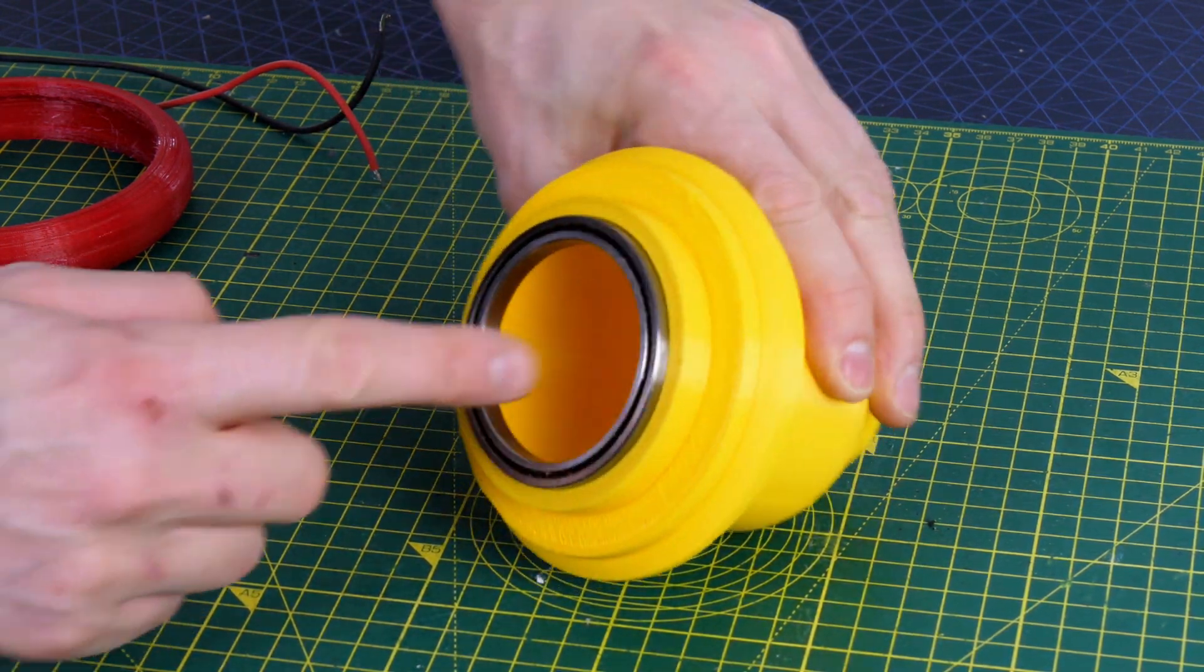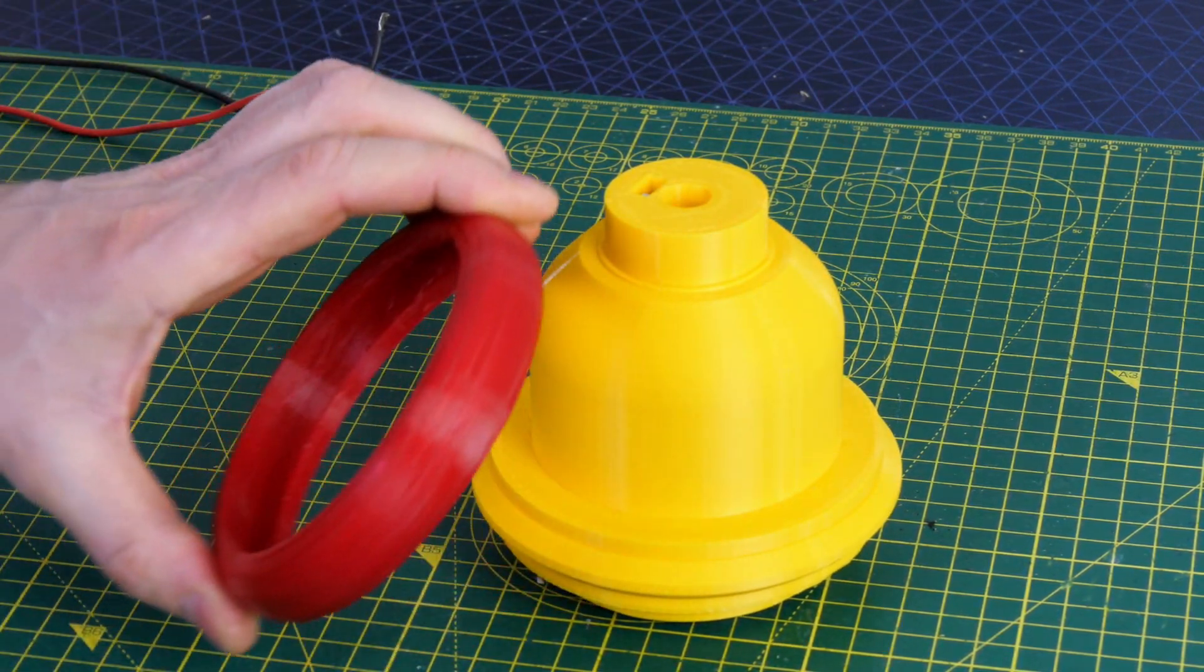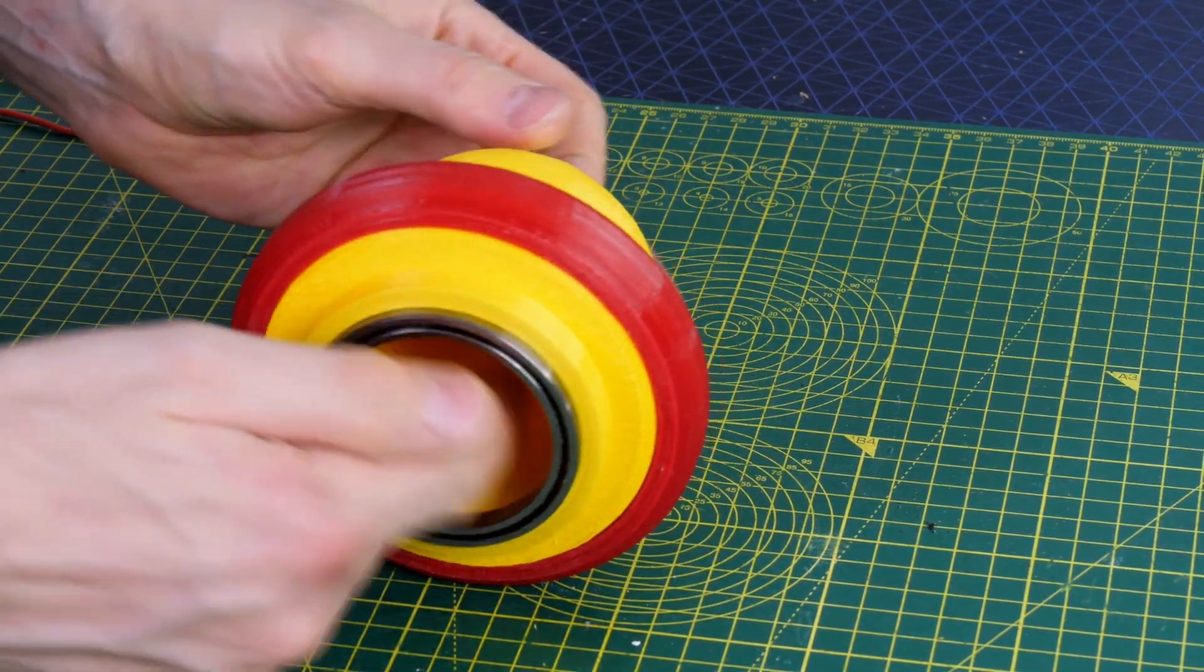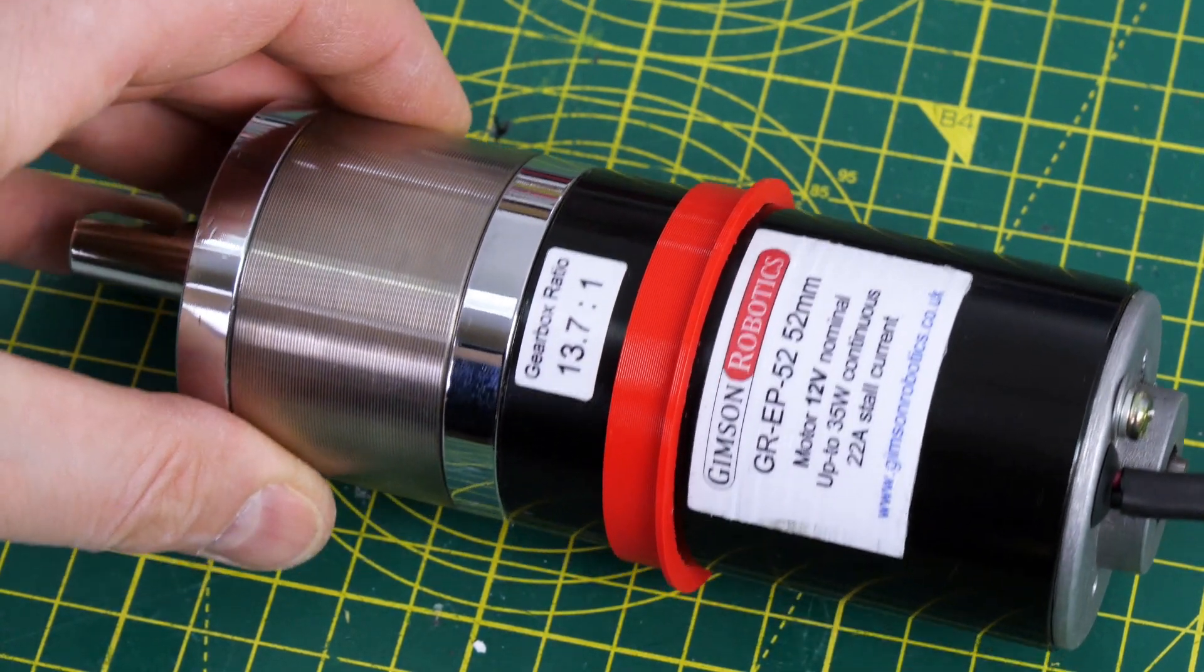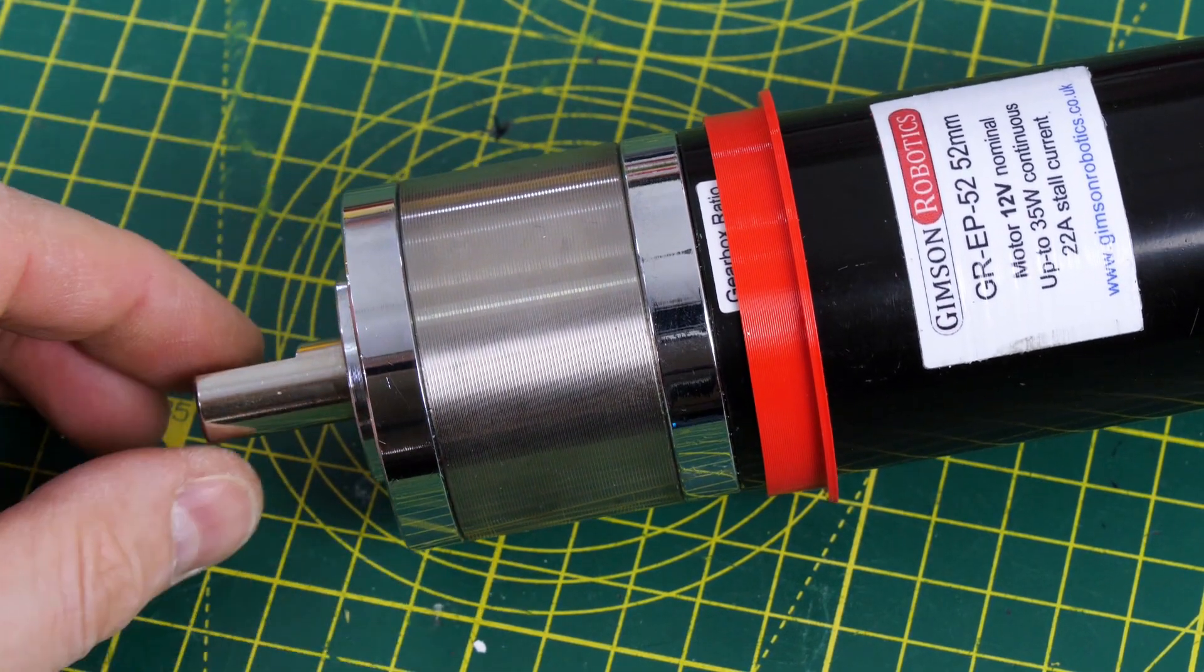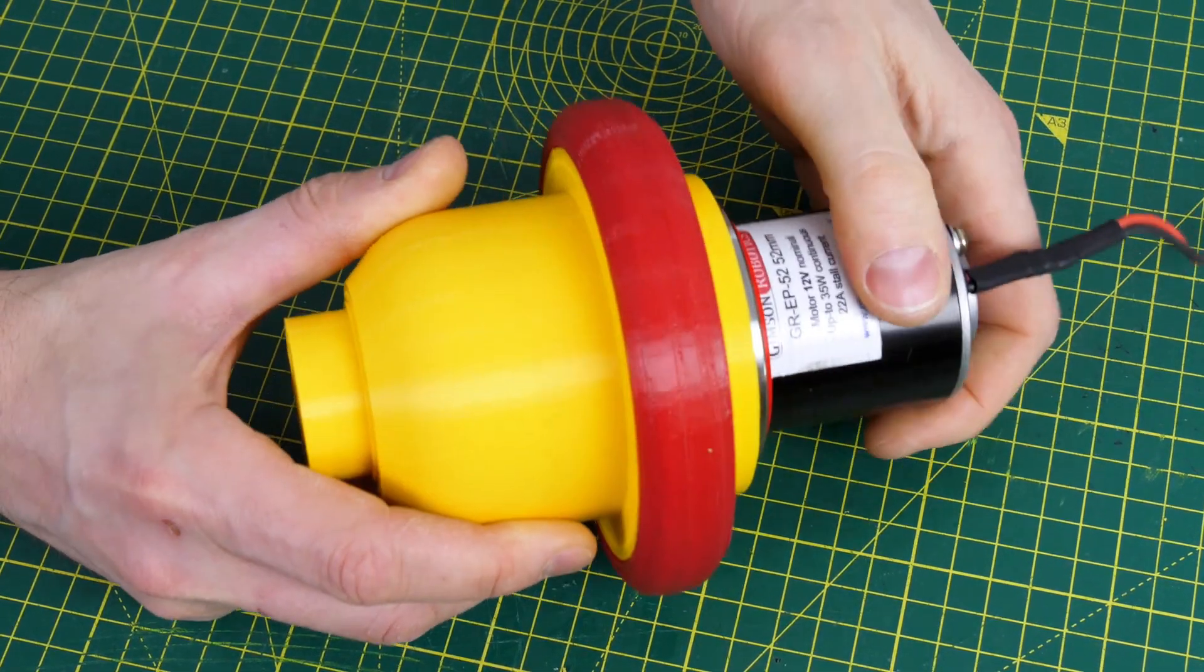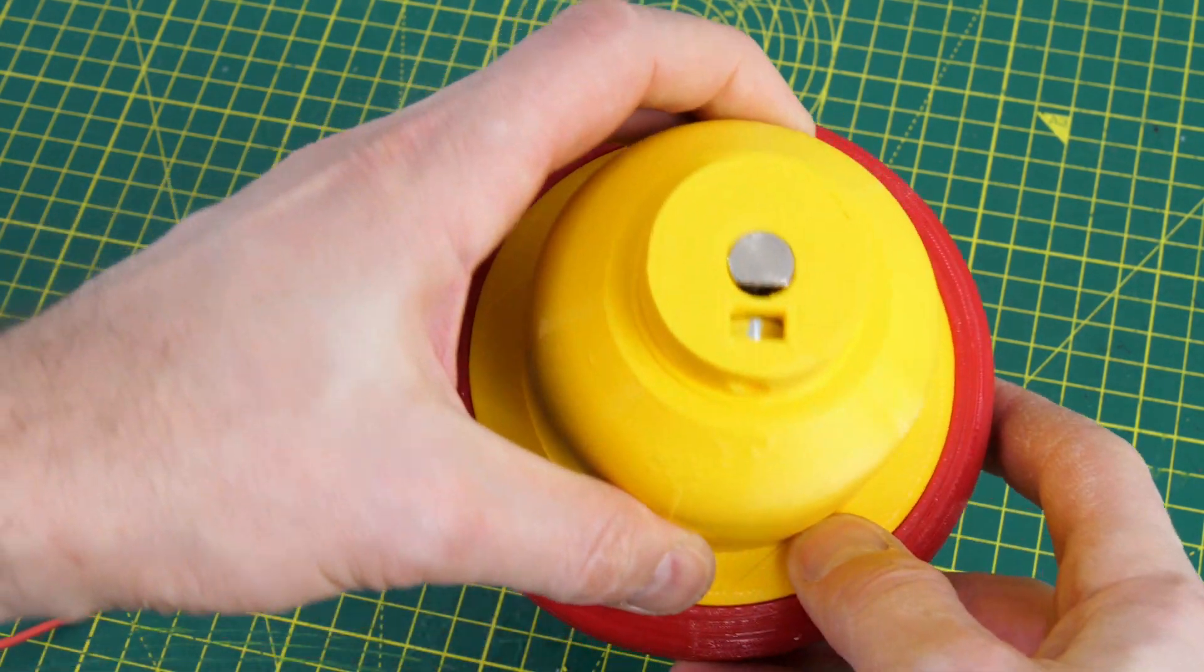So first of all, we're going to deal with the back drive wheel, which is basically a cup shape with a bearing fitted in it, and I've got a TPU tire which stretches to go over it, so we've got some traction with the ground for driving. The motor is one of these Gimson Robotics motors which is 13.7 to 1. I've used these in projects before. It's got a 12mm keyed shaft on it and the whole thing fits into that back wheel, and then the keyed shaft goes into the end of it where there's a grub screw and a captive M6 nut to hold it nice and tight.